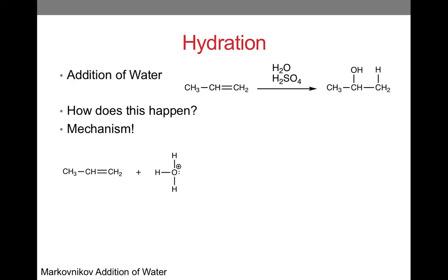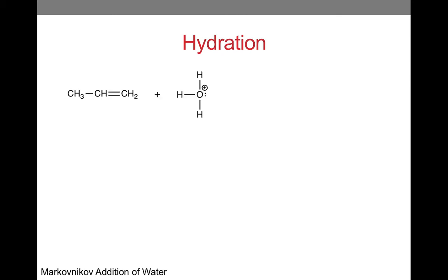Notice that the alkene is reacting with H3O+, which is obtained from the reaction between water and sulfuric acid. Consulting the second rule of organic chemistry, electrons go from where they are — in this case the double bond — to where they aren't. This causes the bond between the hydrogen and oxygen to break, leaving a lone pair on the oxygen. The electrophile is going to add to the less substituted carbon, and we will get a carbocation.